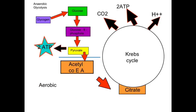During exercise, the complete breakdown of glucose to provide energy for ATP resynthesis is possible, provided that the supply of oxygen to the muscles can be maintained. The breakdown of glycogen and glucose using oxygen is therefore said to be an aerobic process. The initial stage of the breakdown of glucose is called glycolysis and produces a chemical called pyruvic acid, or pyruvate.